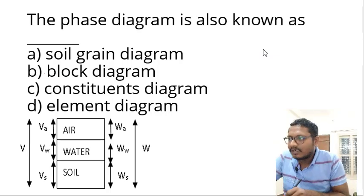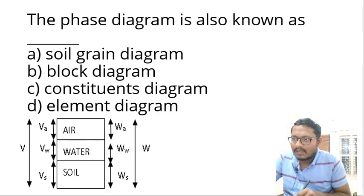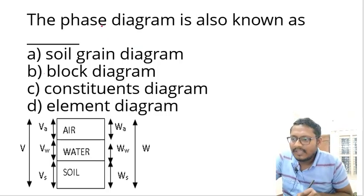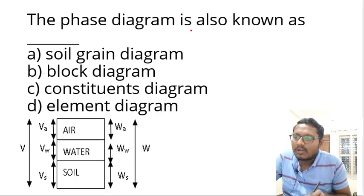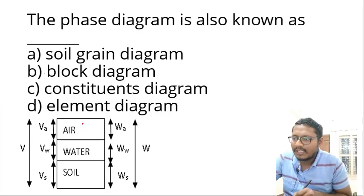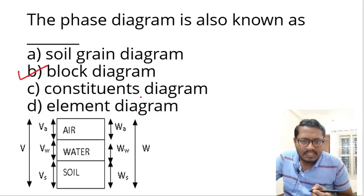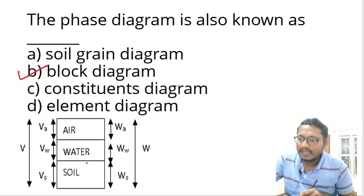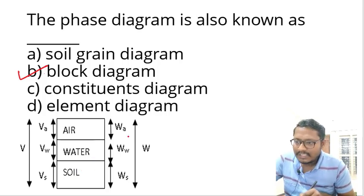The first question is regarding the phase diagram. As you are all aware, the phase diagram is a three-phase diagram. They have asked: the phase diagram is also known as? The answer for this question is option B, that is a block diagram. The phase diagram gives the representation of all three phases of a soil: soil, water, and air. This is an example of a three-phase diagram.